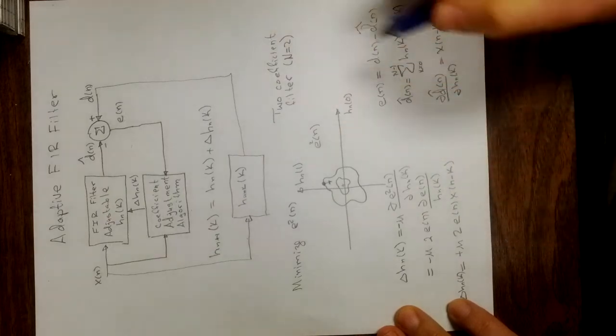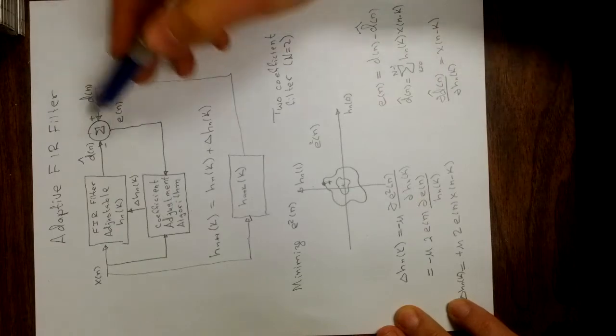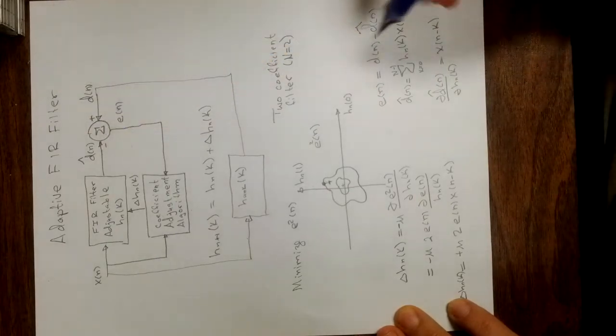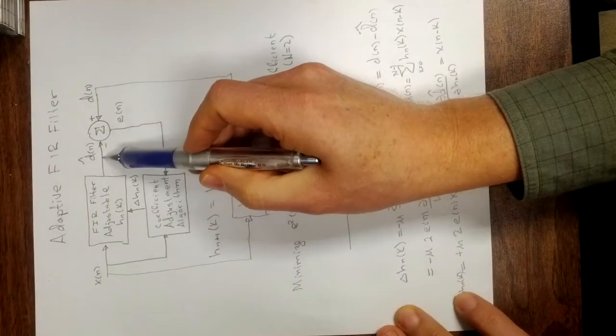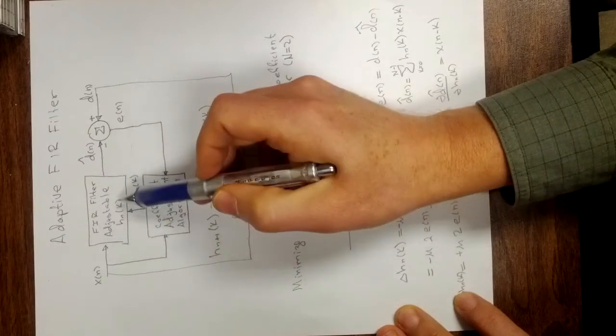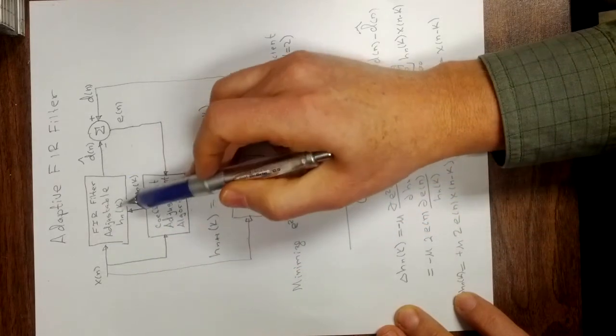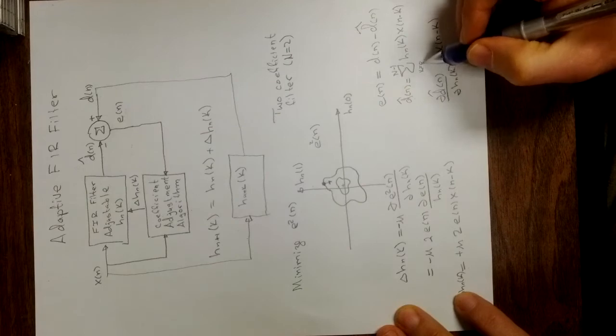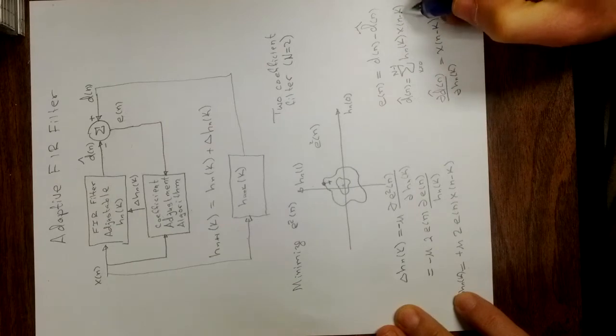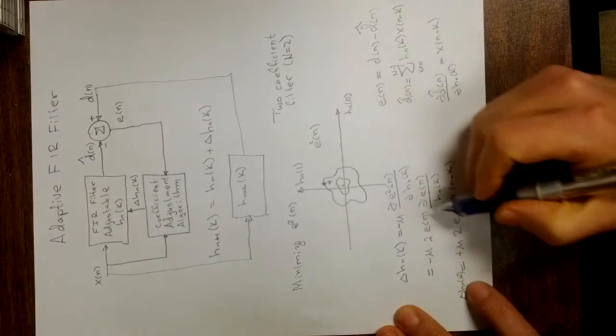Well, e of n is really d of n minus d hat of n. You can see that up from here, e of n is d of n minus d hat of n. And what is d hat of n? Well, d hat of n right here is equal to the output of this filter, which is the convolution of x of n with h sub n of k. So here we have d hat of n, this is the convolution, the sum k equals 0 to n minus 1, h n of k x of n minus k. So there's the convolution, and so now let's look at the derivative.